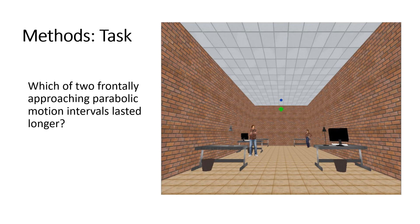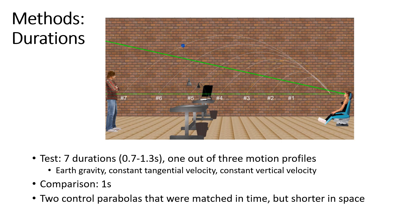we immersed participants in a VR mini cave environment that you can see here on the right. We showed them two motion intervals where balls were approaching them frontally on parabolic trajectories and our participants had to tell us which of these two motions took longer. Just a pretty standard two alternative forced choice task here.